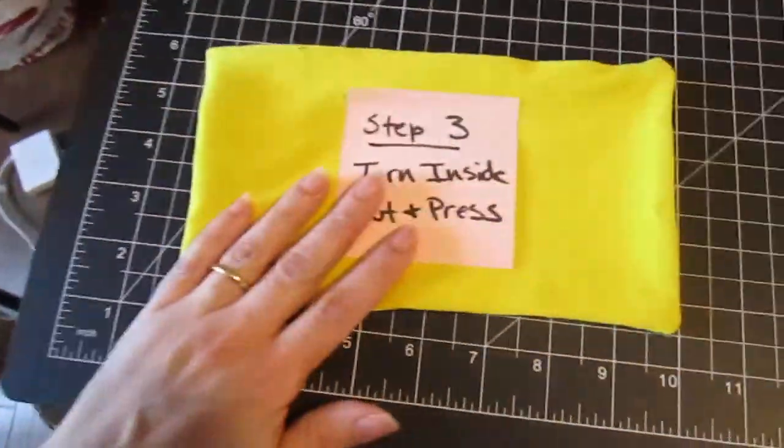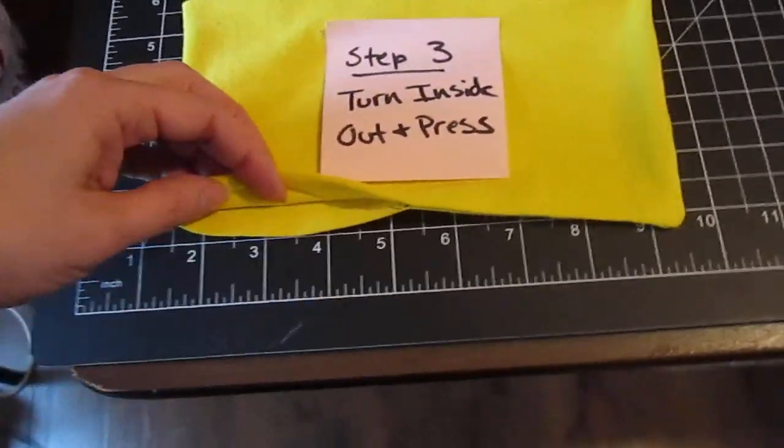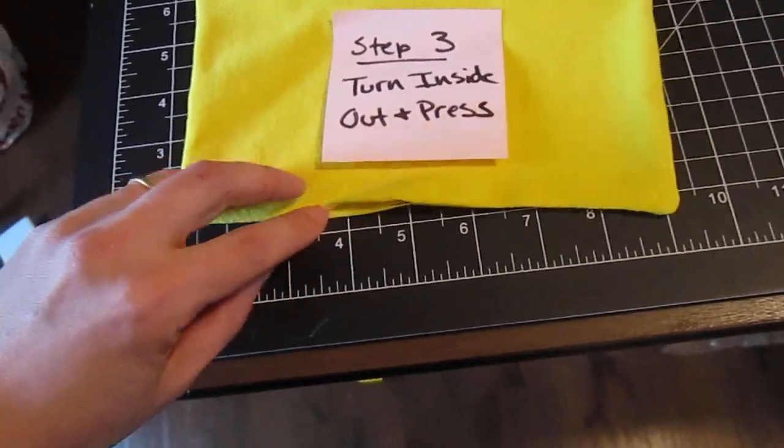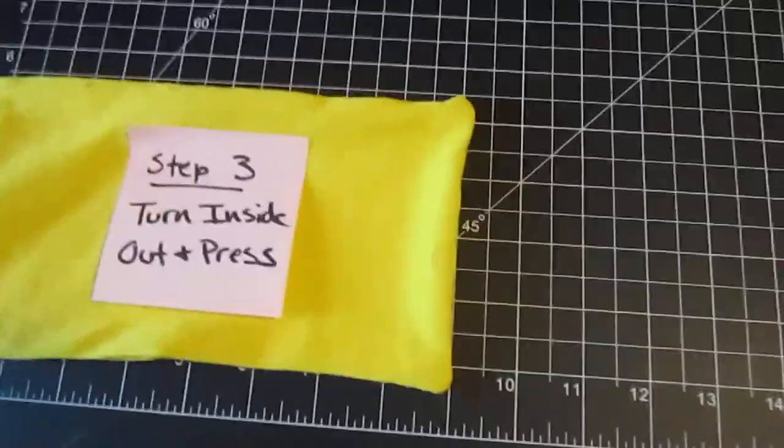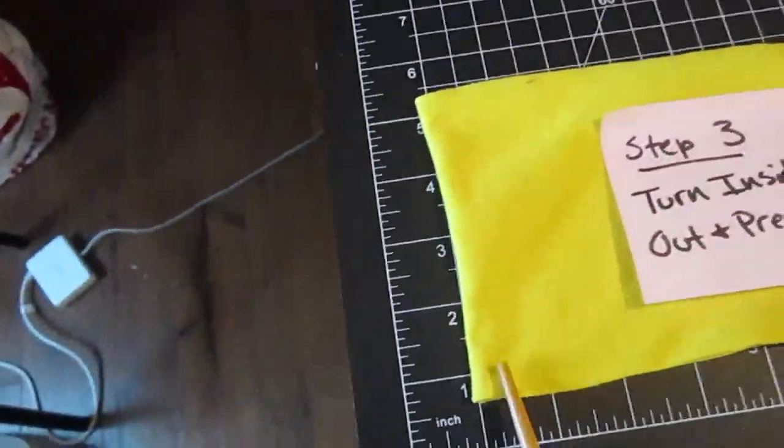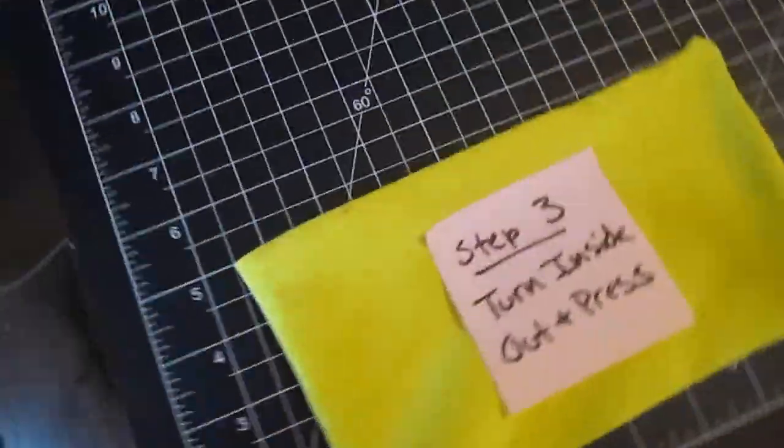So in step three, turn everything inside out and you're going to want to press it. So here's that opening that I used to turn. I want to press those seam allowances down. Make those nice and straight. Press these up. And this is where you can use your chopstick to get the nice corners in, to turn it nicely. And then press.